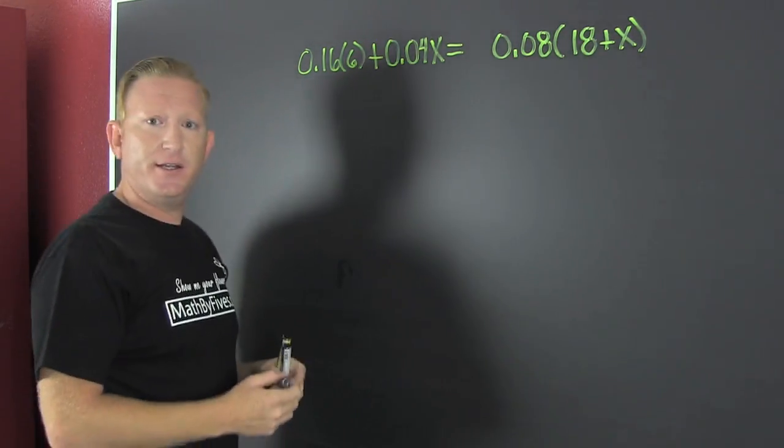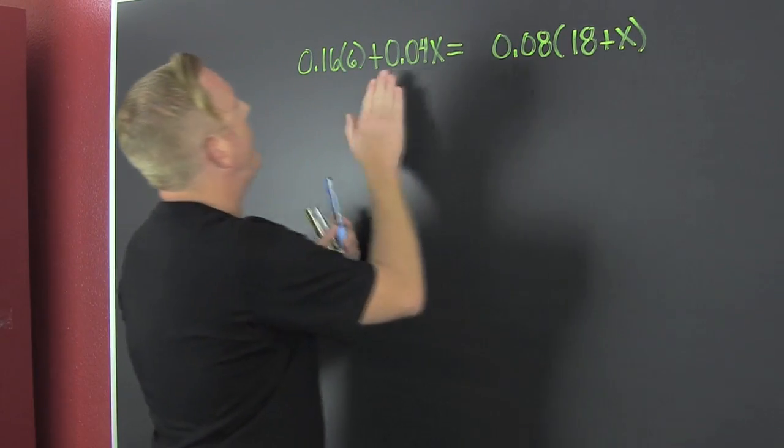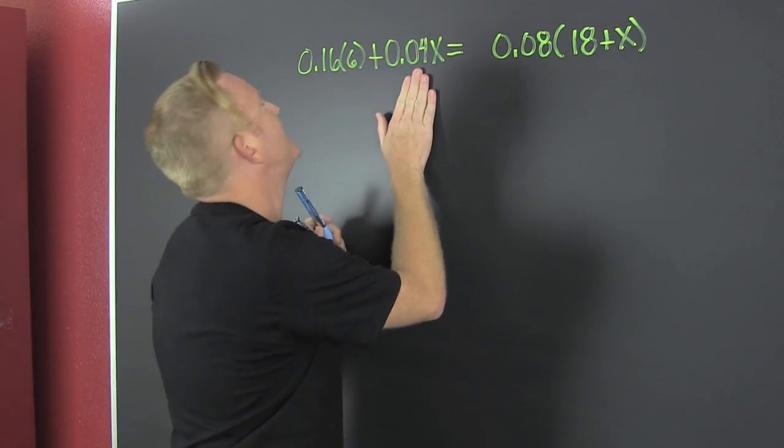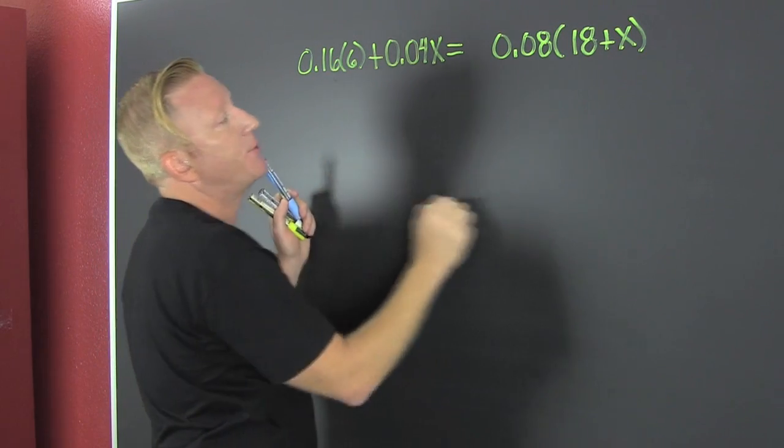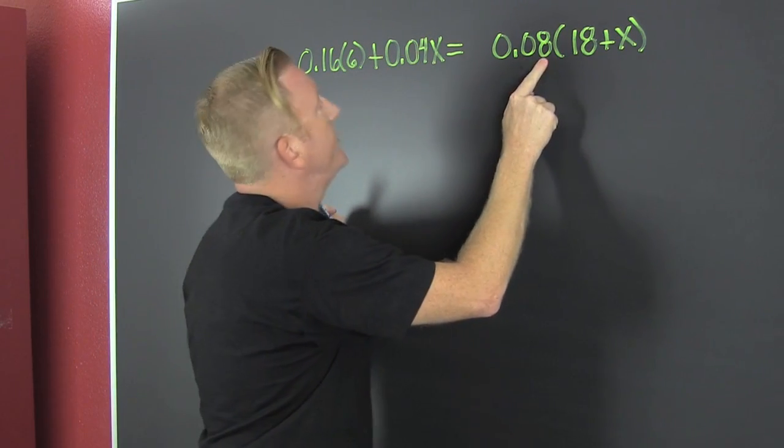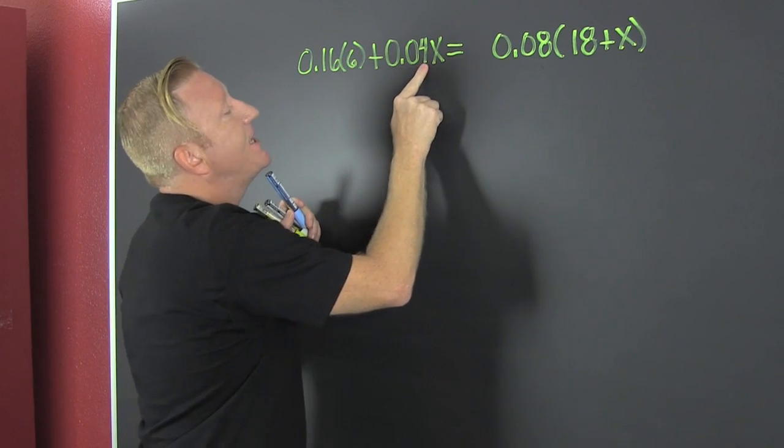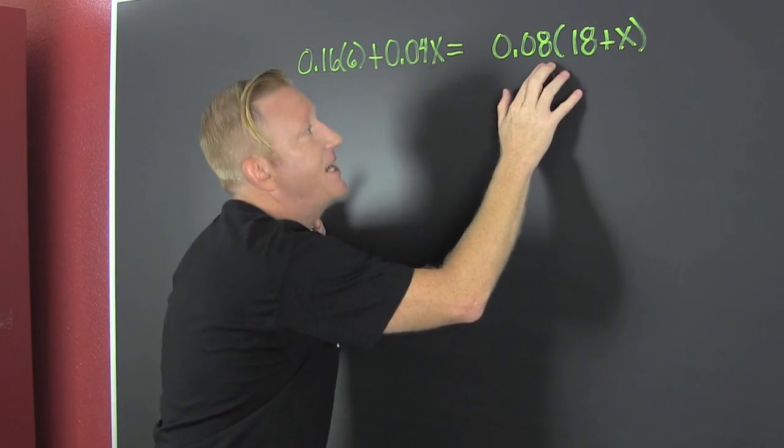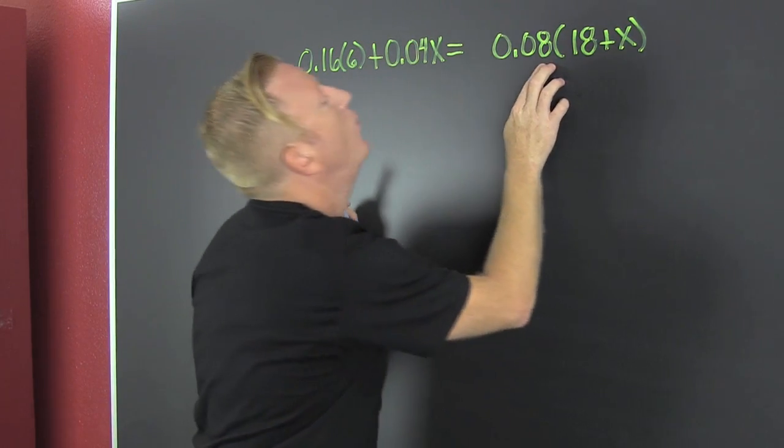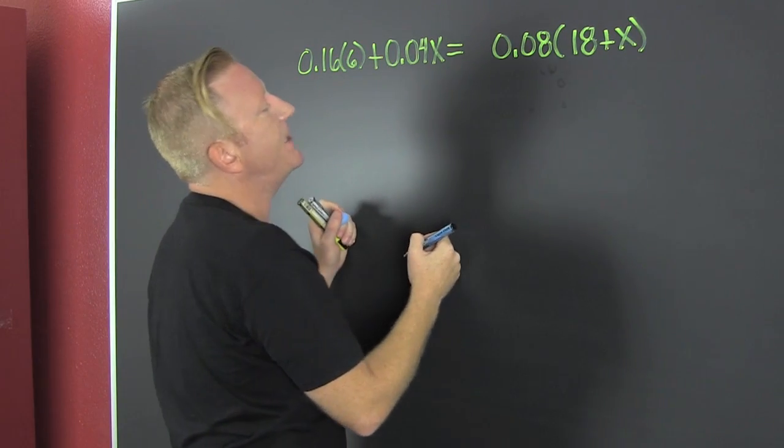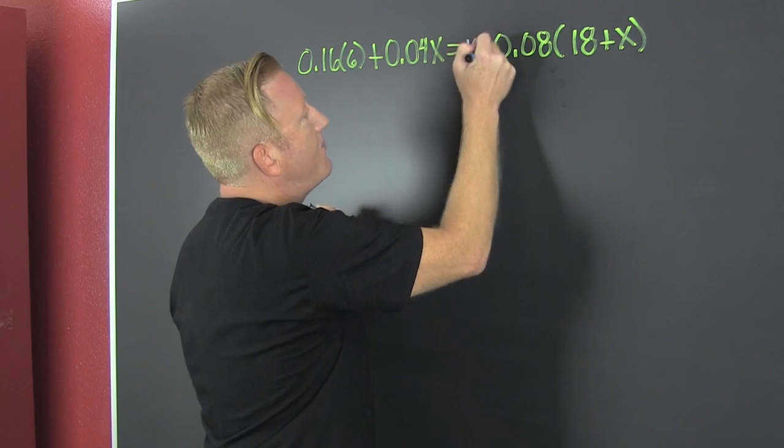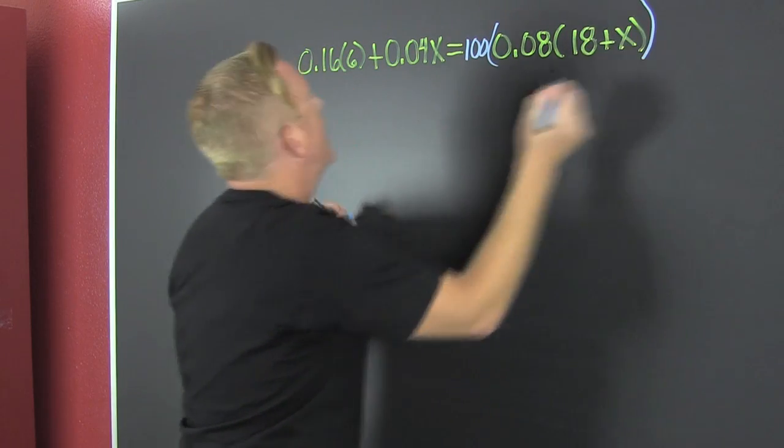So what do we want to do? Let's clear those decimals. You clear the decimals by finding out the deepest decimal. What am I talking about, deepest decimal? Looks like that's the hundredths place, that's the tenths place, that's the hundredths place, that's the tenths place, that's the hundredths place. So the deepest decimal is in the hundredths place, so we're going to multiply both sides by a hundred. That's going to clear those decimals.